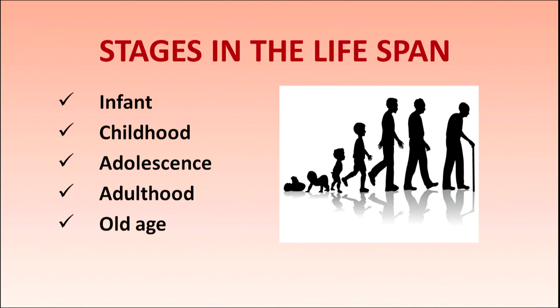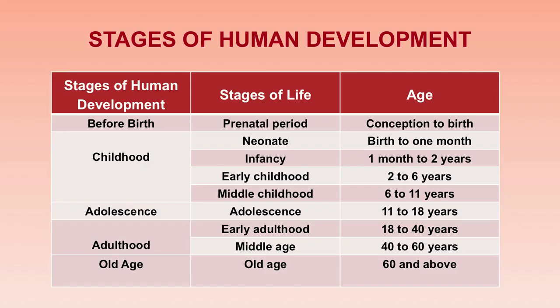Now I will talk about the different stages in the life span. After birth there is infancy, childhood, adolescence, adulthood, and old age. We will discuss how many months and years are related to these different stages of human development. The first stage is the prenatal period — before birth — which means in the womb. This is from conception to birth, which is about nine months.